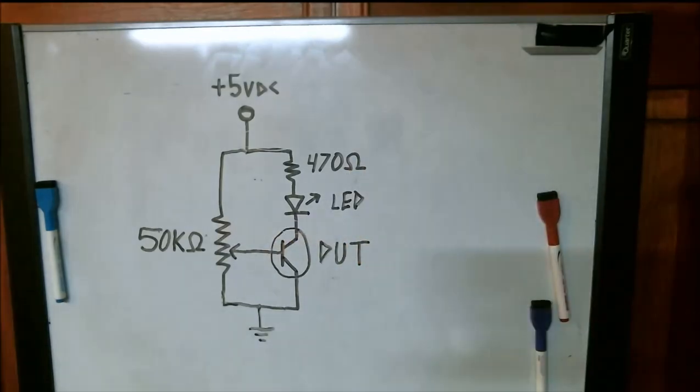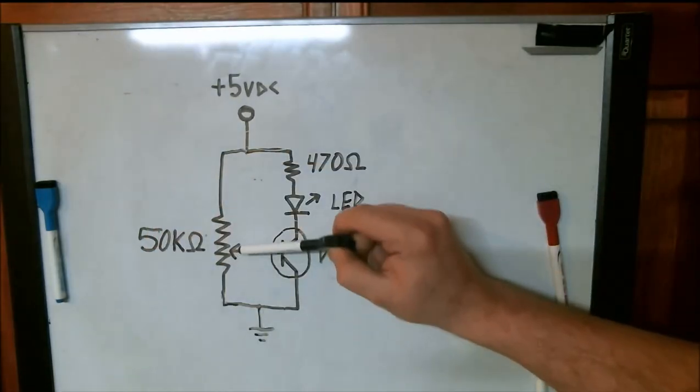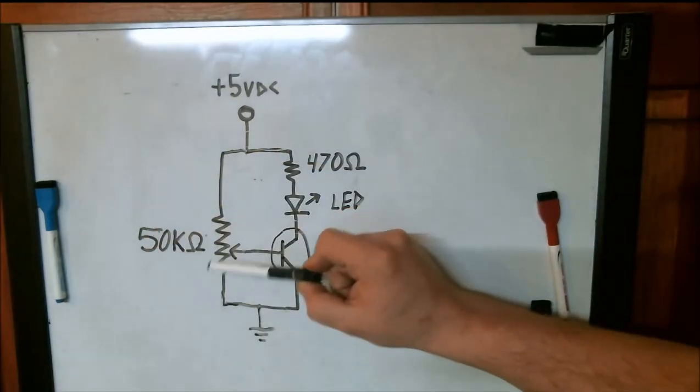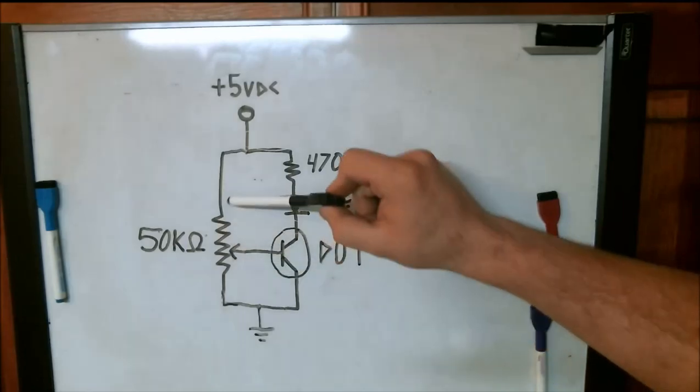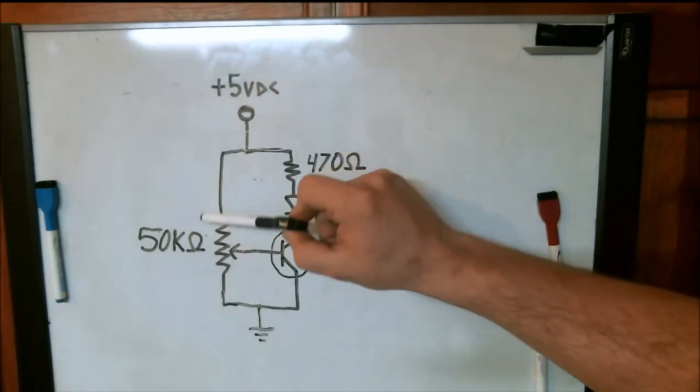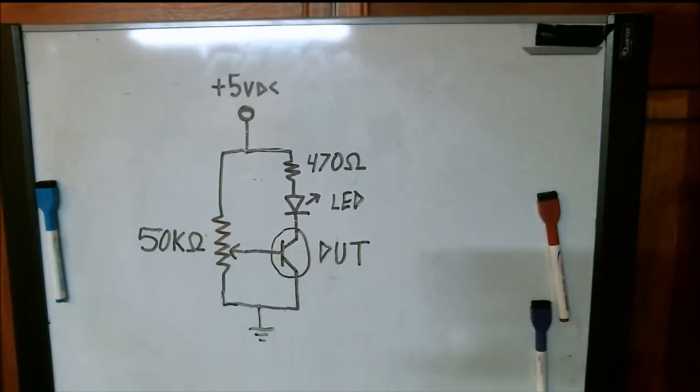So typically the center pin of your potentiometer. And then you would just rotate this. So obviously the farther the sweeper is to ground, the lower the voltage will be at the base. And the closer the sweeper is to the 5 volt power supply, the higher the voltage or current will be at the base of your transistor.